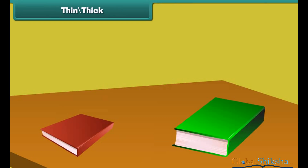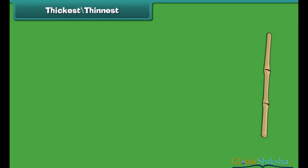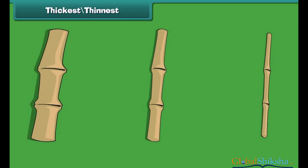Some objects are thin and some are thick. The picture on the left is thin and the picture on the right is thick. To compare the thickness of more than two objects, we use the words 'thickest' and 'thinnest.' The first stick is thickest.